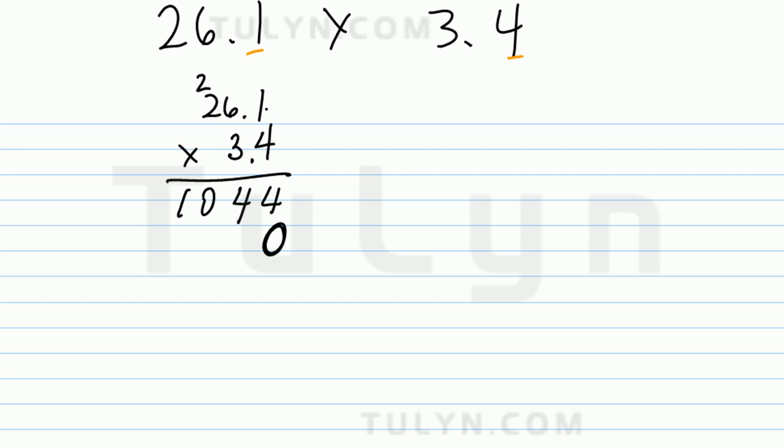Place value holder 0. 1 times 3 is 3, 6 times 3 is 18, put a 1 there. 2 times 3 is 6, 6 plus 1 is 7.